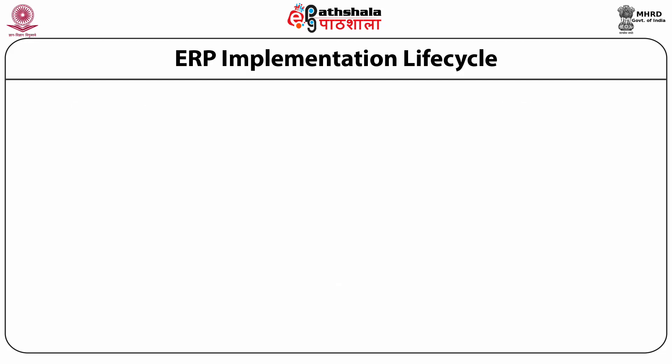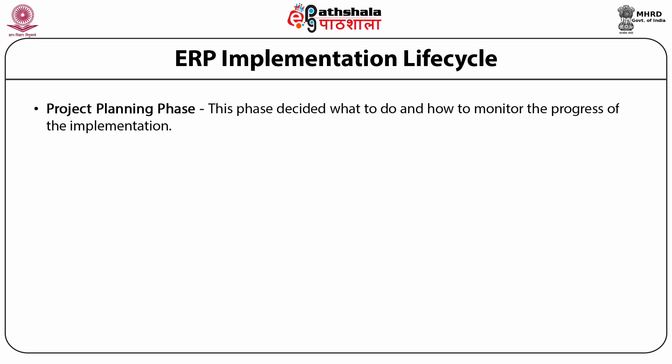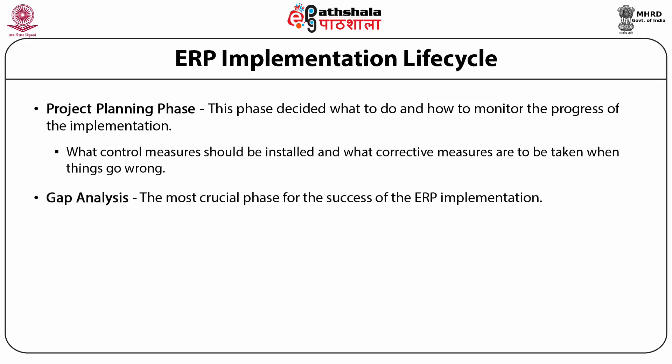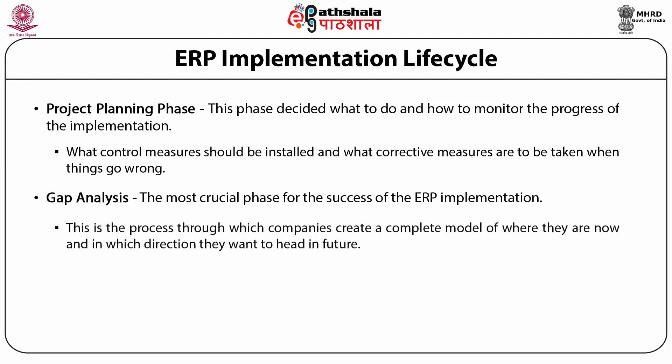The next phase in the process is project planning. This phase decides what to do, how to monitor the process of implementation, what control measures should be installed, and what corrective measures are to be taken when things go wrong. Then comes the gap analysis, the most crucial phase for the success of ERP implementation. This is the process through which companies create a complete model of where they are now and in which direction they want to head in future.